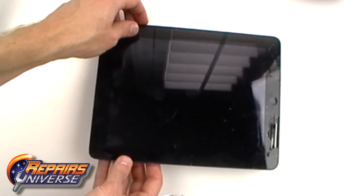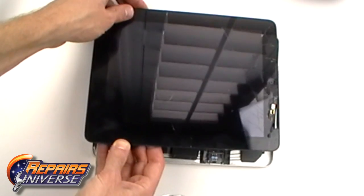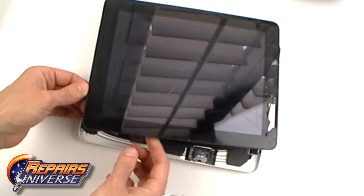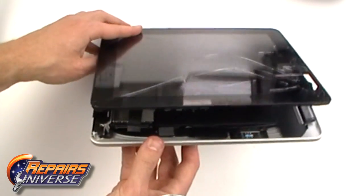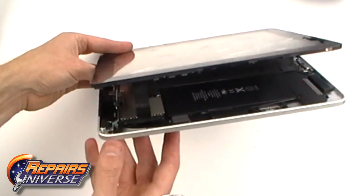With the clips released you can ease off the screen, but be careful as it is still held in place with a couple of ribbons. Just ease it off the side enough to give you access to the ribbon as being shown here now in the video.